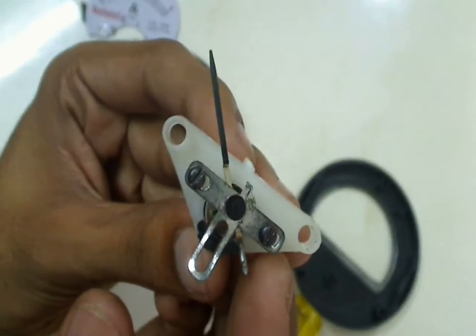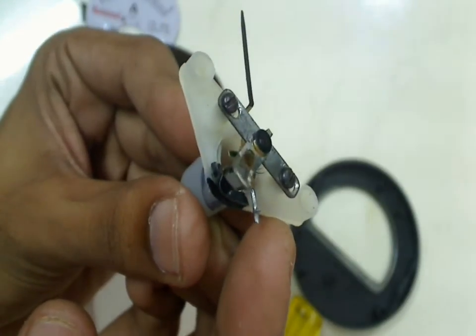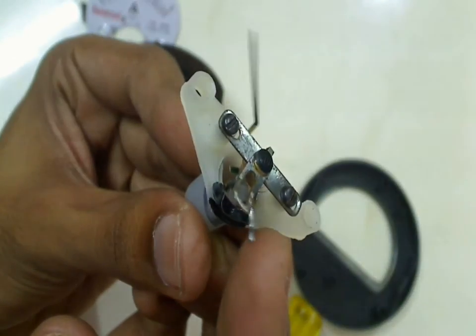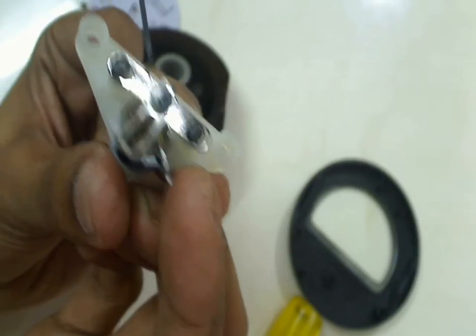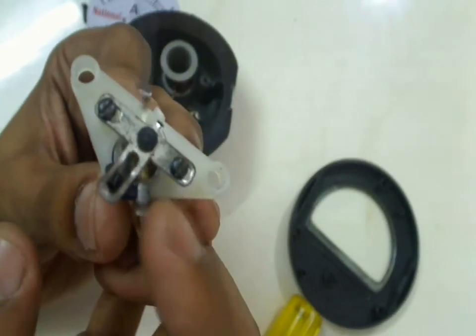As you can see closely here that there is a small solder kept on this other end of this pointer. That's not a defect. The solder is added there so that it can balance the weight of this pointer and the pointer can go freely.